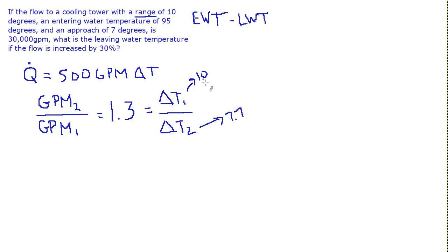So the range used to be 10, and now it's going to decrease to 7.7, which makes sense. We're moving more volume. We're going to have a smaller delta T.